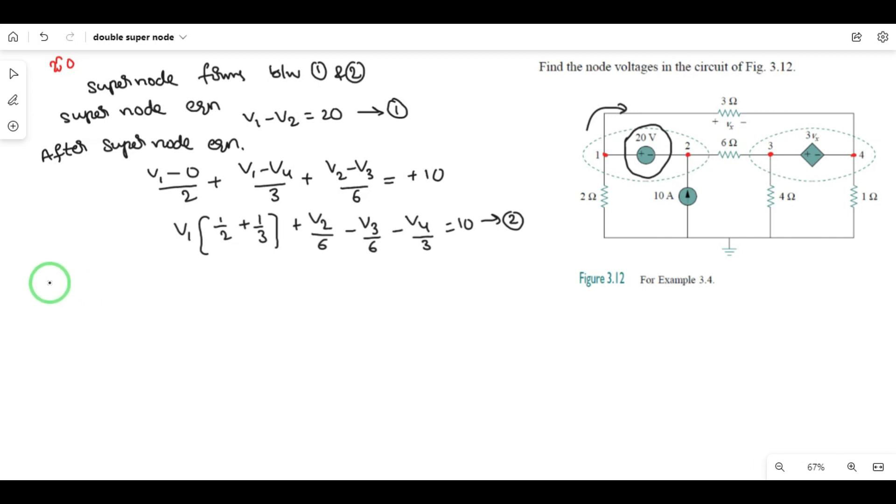Next, another super node forms between node 3 and 4. V3 minus V4 is equal to 3Vx, where Vx is the voltage across the 3 ohms. V3 is equal to Vx, so 3V1 minus 3V4. The proper form is 3V1 minus V3 minus V4 equals plus V4, so minus 2V4 equals 0. This is equation 3.